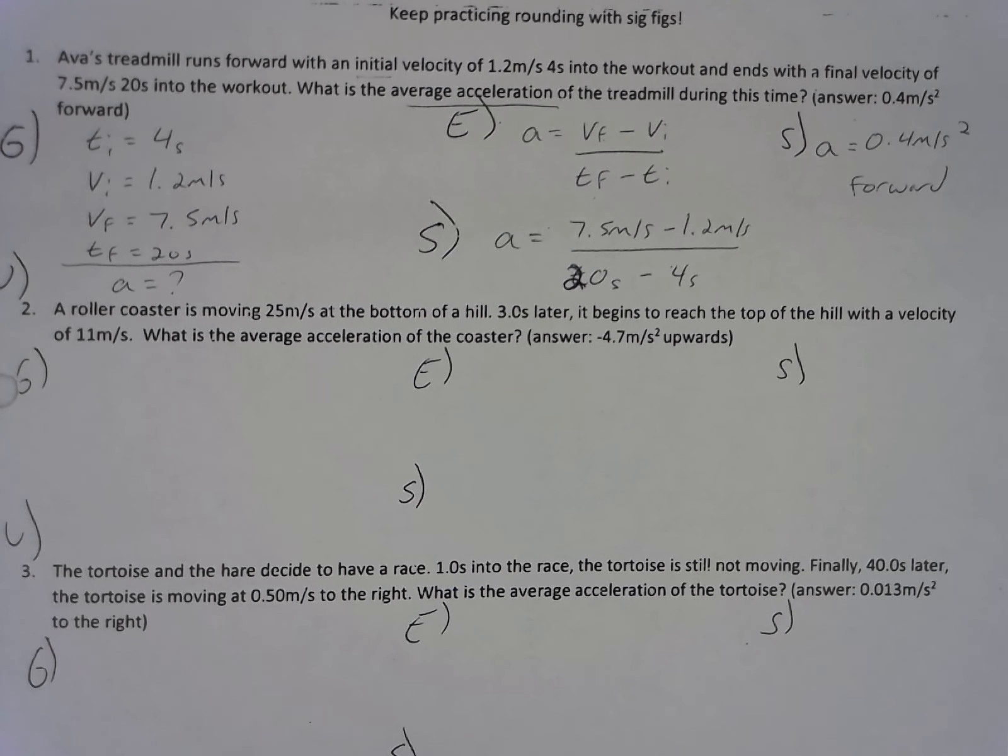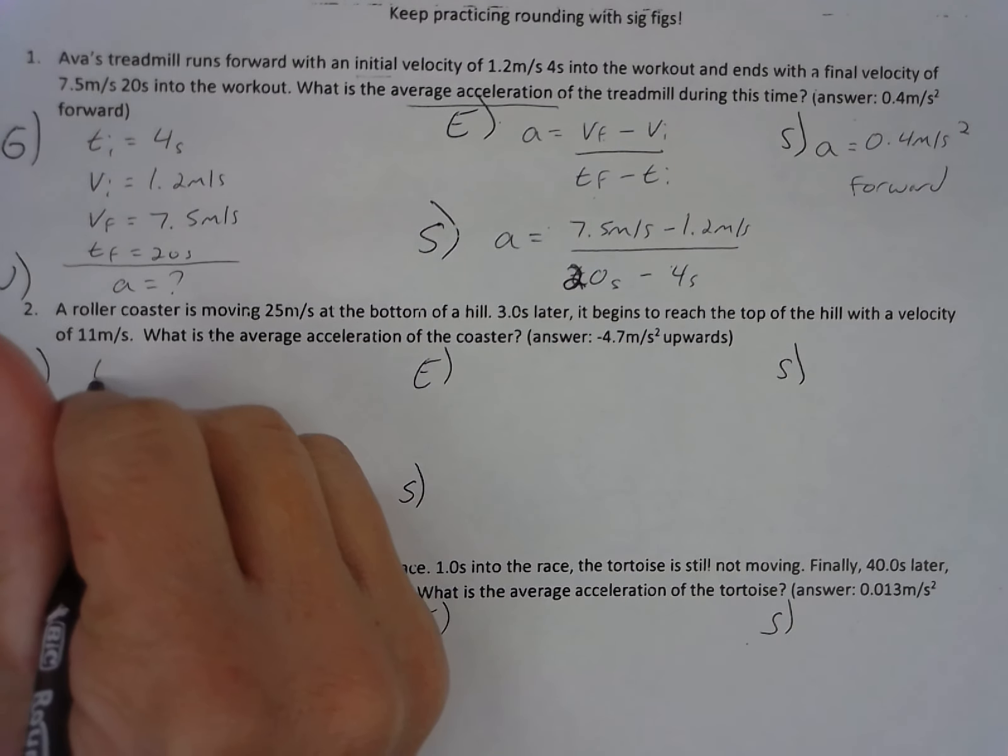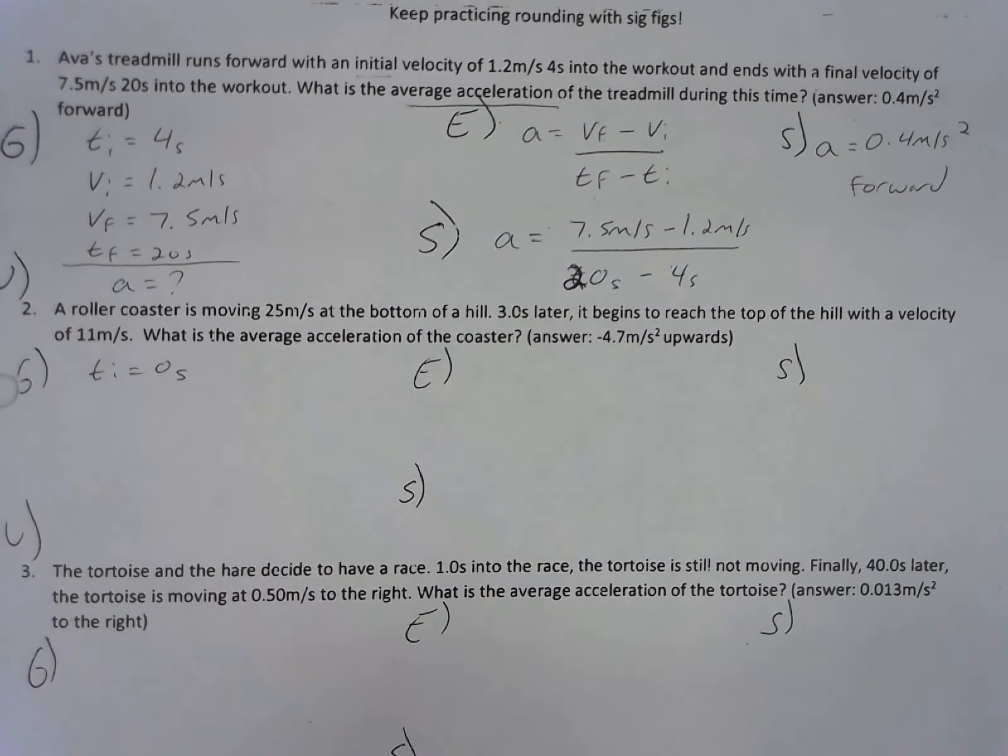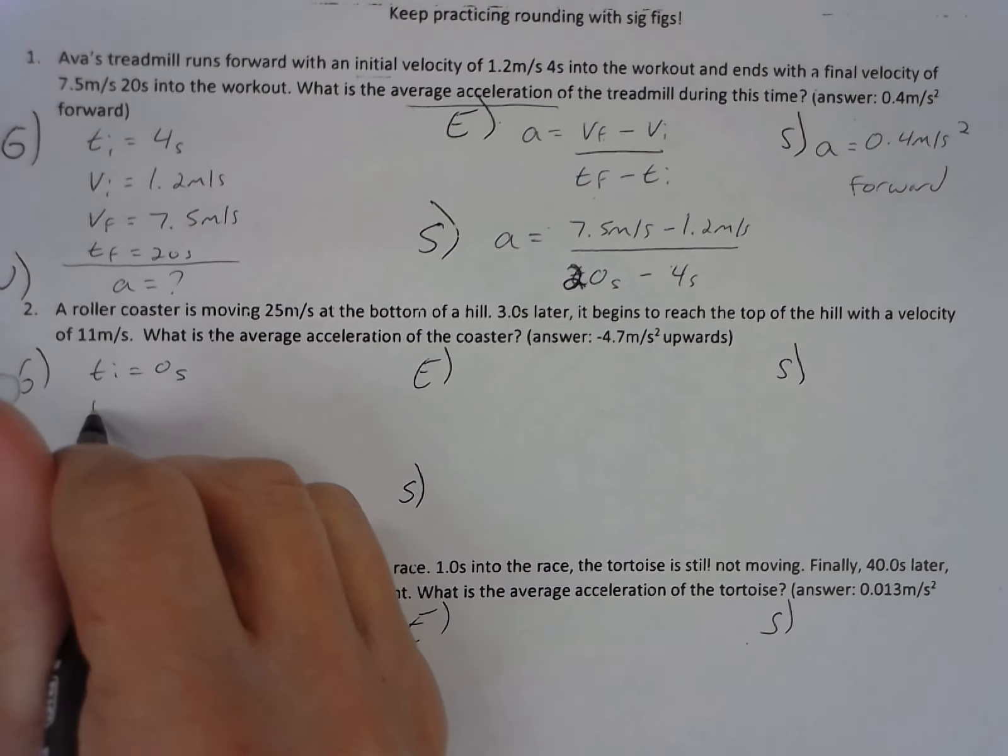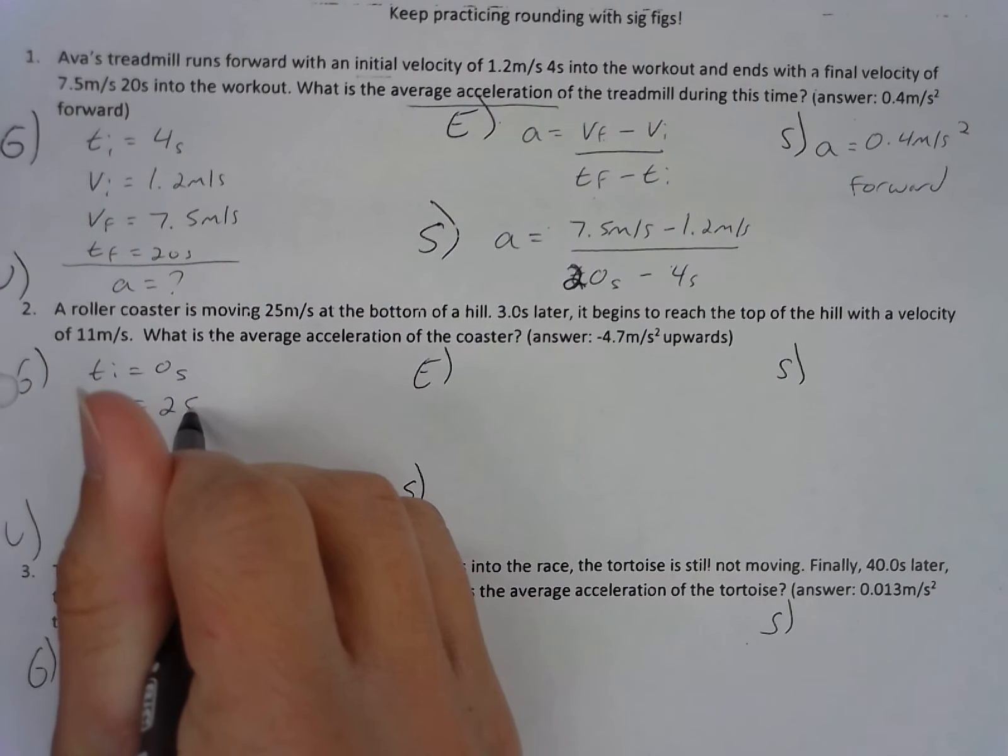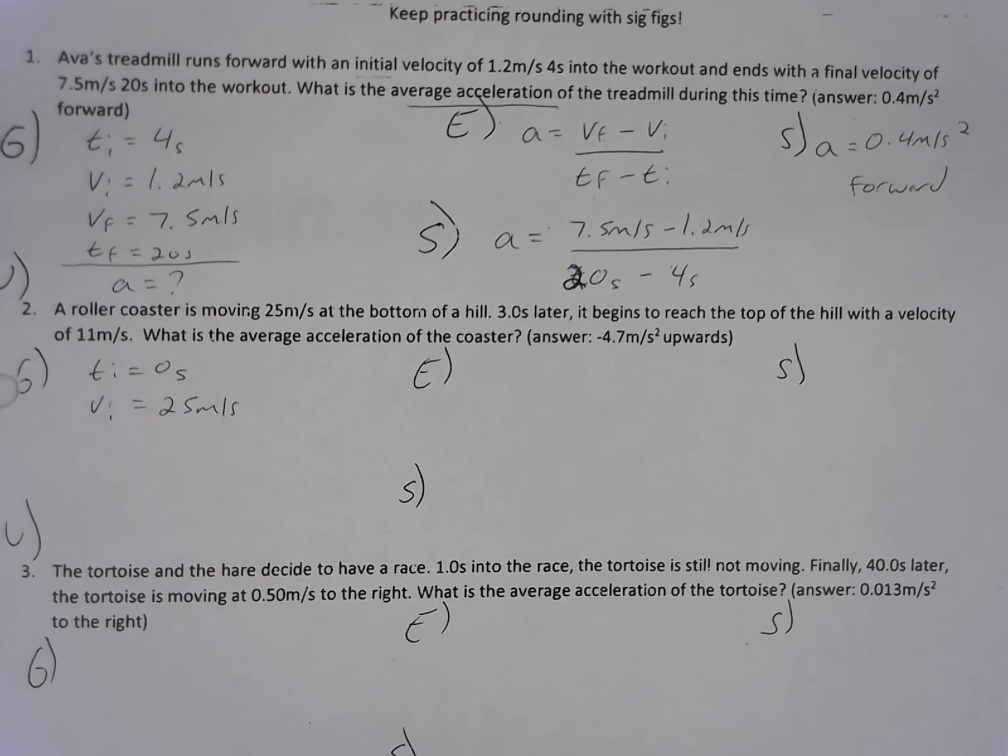So in physics story problems, if you're not given an initial time, then we can assume that this problem started at the beginning of the time. So my Ti for this problem here would just simply be 0 seconds. And the initial velocity then at that point in time at the beginning of the problem would be 25 seconds.